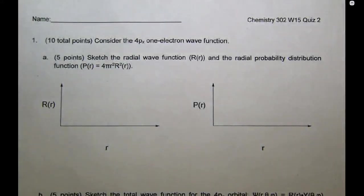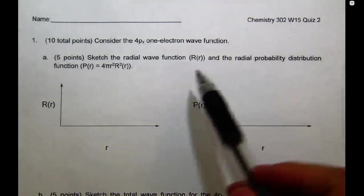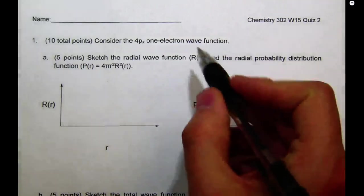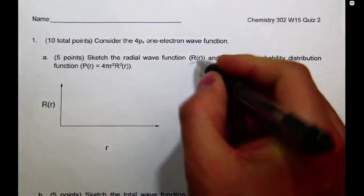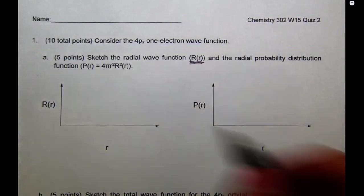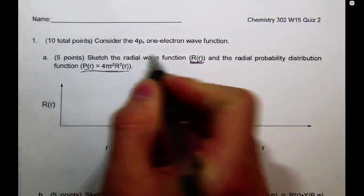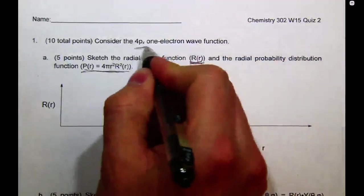Okay. All right. Hi, everybody. This is the video solution for the second quiz for Chemistry 302. So the first part of the question asks us to sketch the radial wave function, R(r), and then also the radial probability distribution, P(r), for a 4px one-electron orbital.